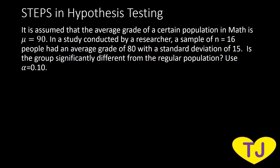First, we start with step one: we are going to state the hypothesis. When you state the hypothesis, you locate your parameter. The parameter here is: the average grade of a certain population in math is mu equal to 90. So we can now write our null hypothesis: H₀: μ = 90.